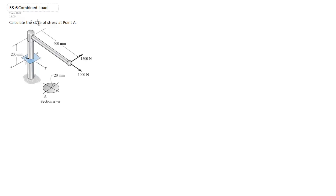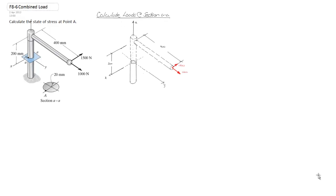I'm going to create another sketch here which is going to allow us to translate the various force components from the end of the arm down to the section AA, so that we can then go on to calculate the stresses caused by those force components. I've drawn in as dotted all the area between the plane at AA and the point where our loads are applied. This will allow us to translate those load components to get their equivalent effects at plane AA.